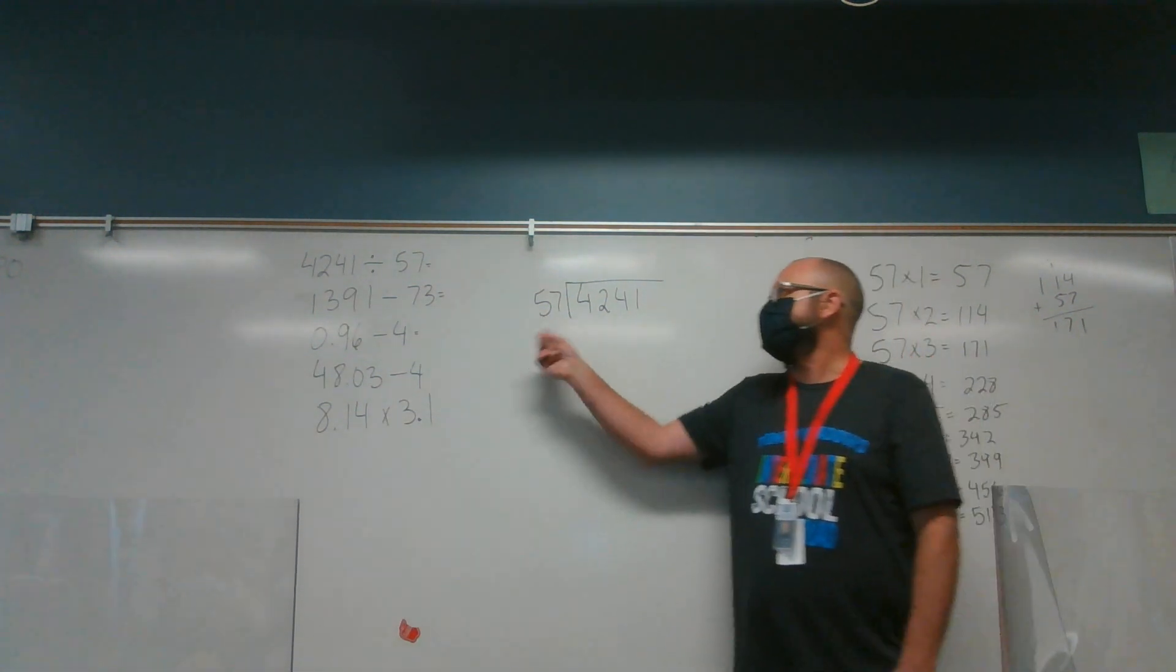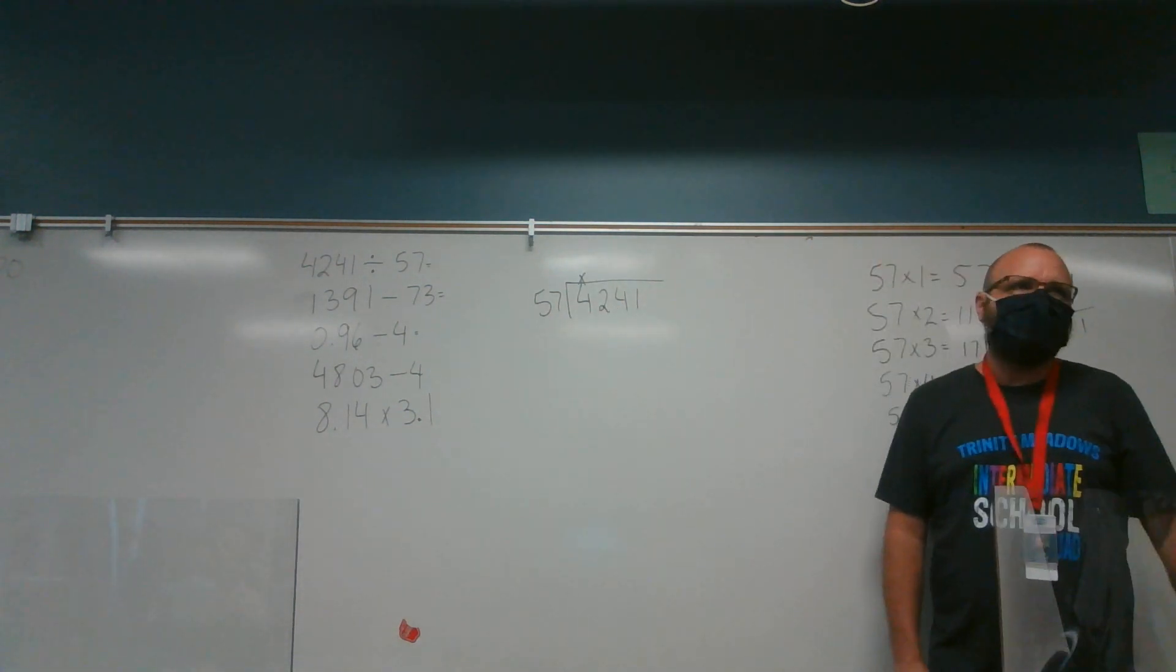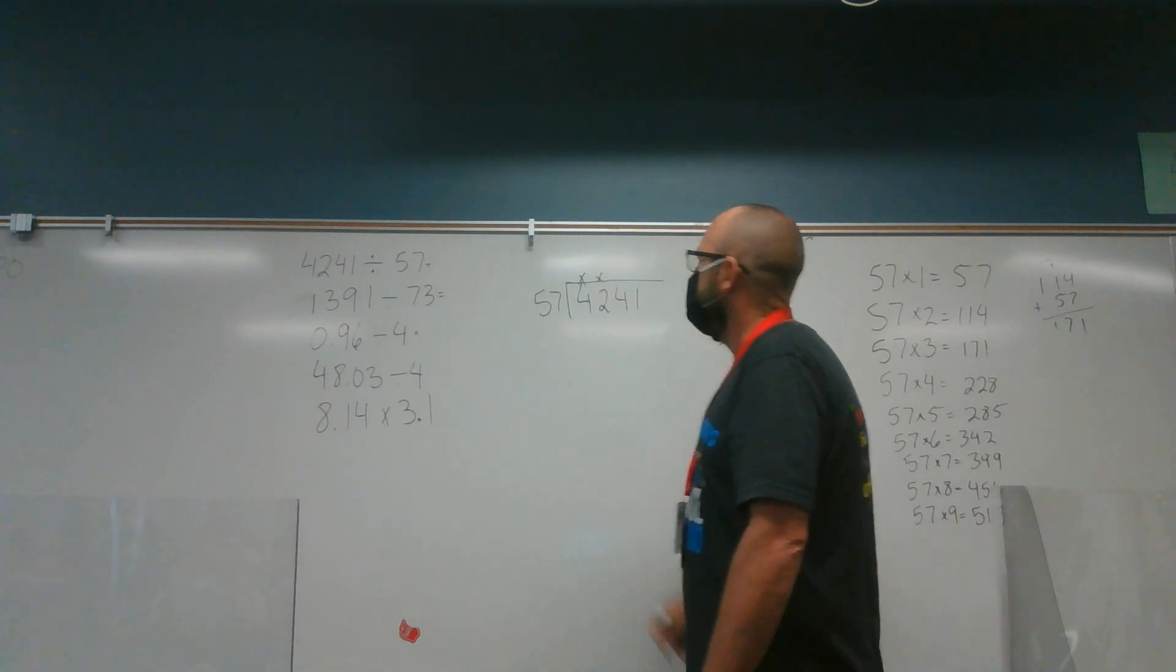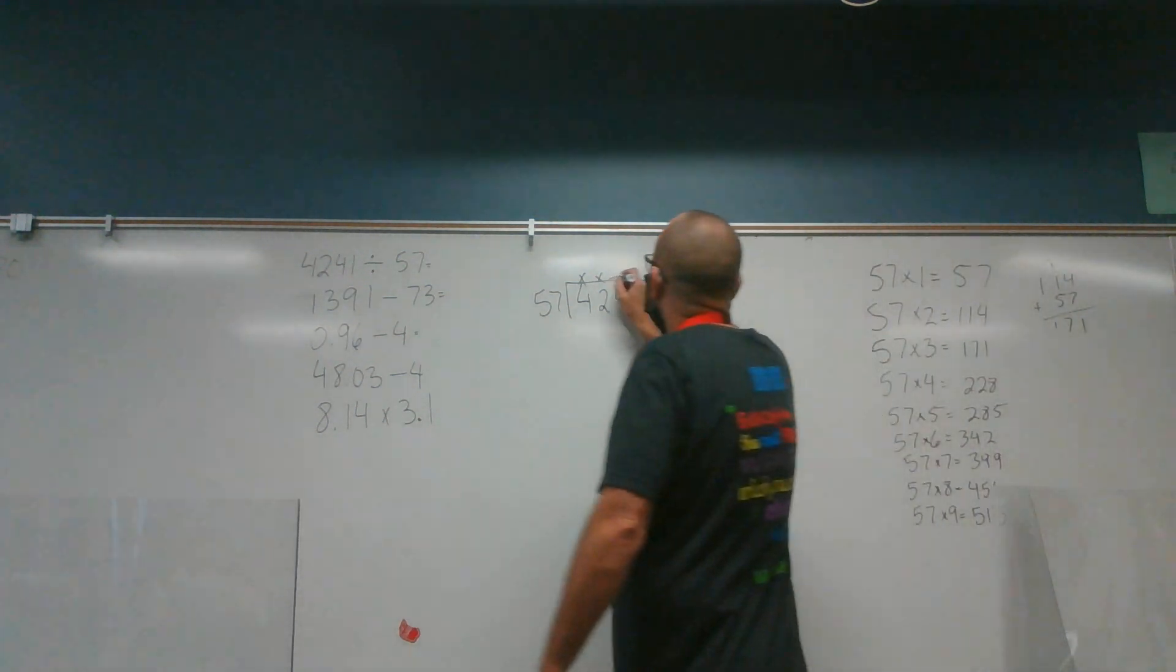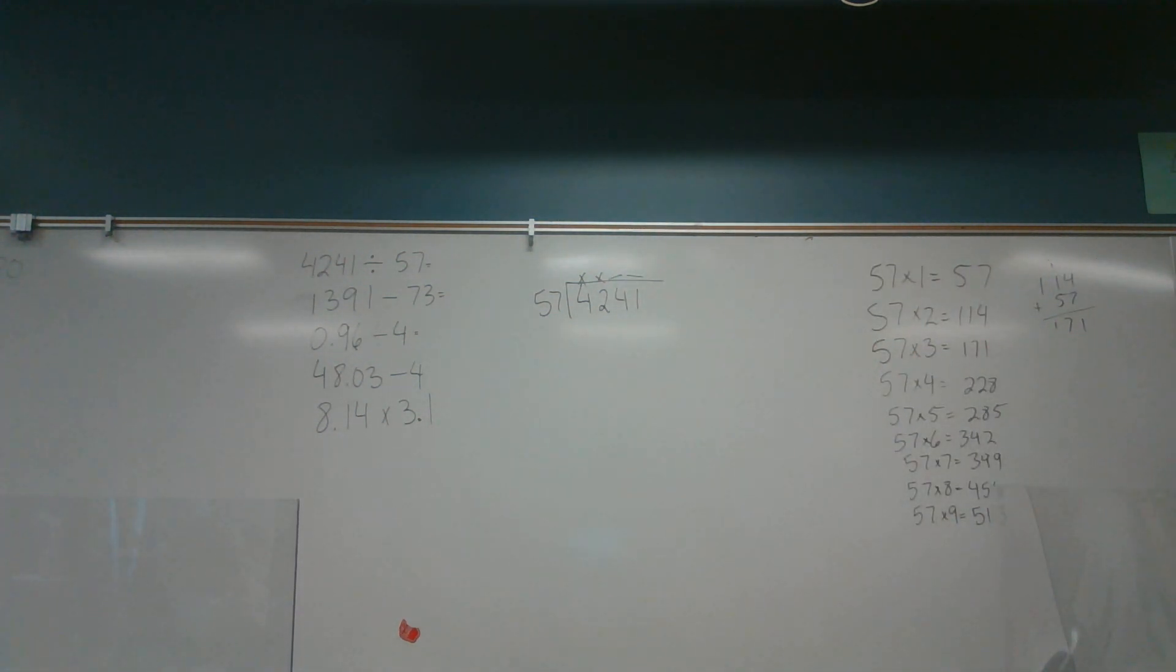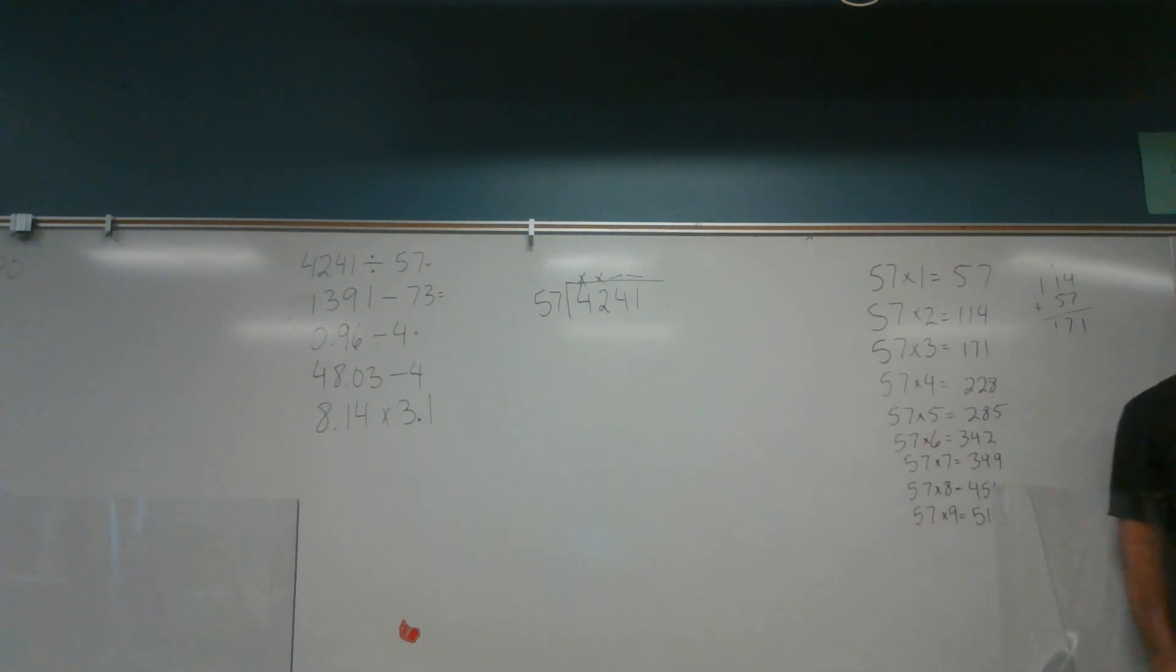So I asked myself, self, does 57 go into 4? My self says no. I asked myself, self, does 57 go into 42? My self says no. I asked myself, self, does 57 go into 424? My self says yes. So I have a two-digit quotient. Now I come over here and I got to find as close to 424 as I can get in my multiples without going over: 57, 114, 171, 228, 285, 342, 399, 456, which is too big. So I have to go to 7.